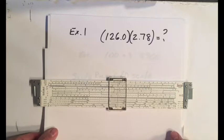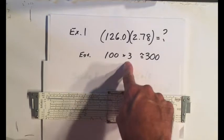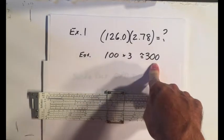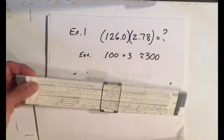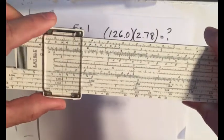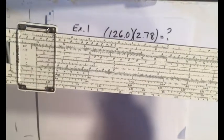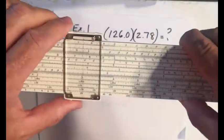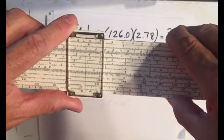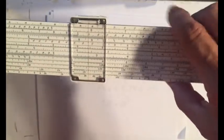You know it's going to be approximately, if you round that off to 100 and around 2.78 to 3, it's going to be in the order of 300. If you look at 1.26 on the D scale, put the left index 1 on that one, times 2.78, and it's right at 3.5.